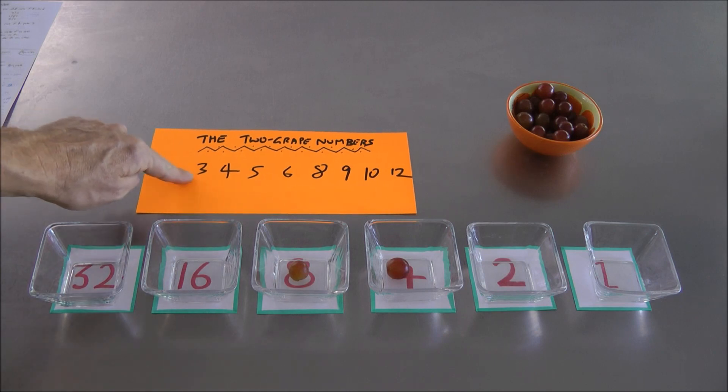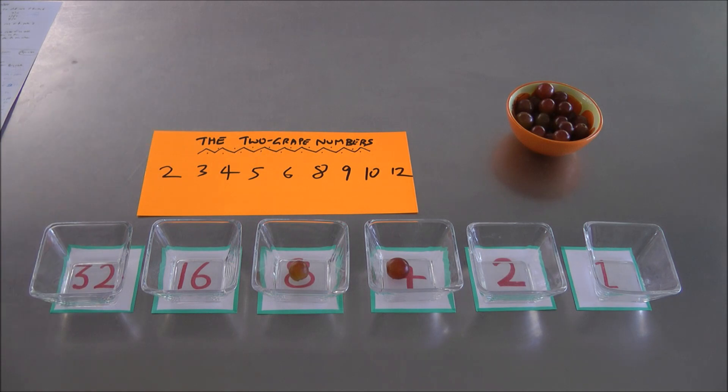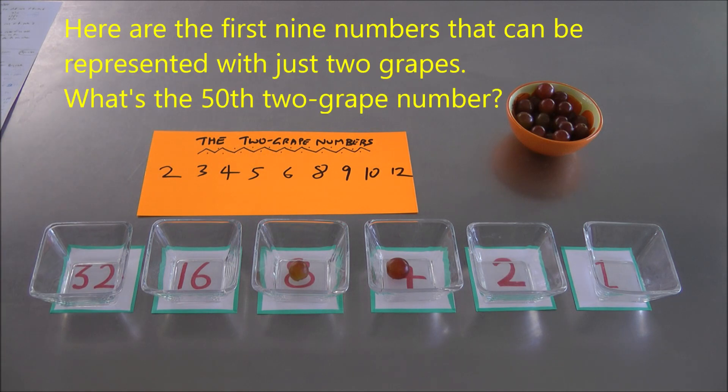The first number is 2, the second is 3, the third is 4, the fourth is 5, and so on. What's the 50th number on this list going to be? What's the 50th two-grape number?